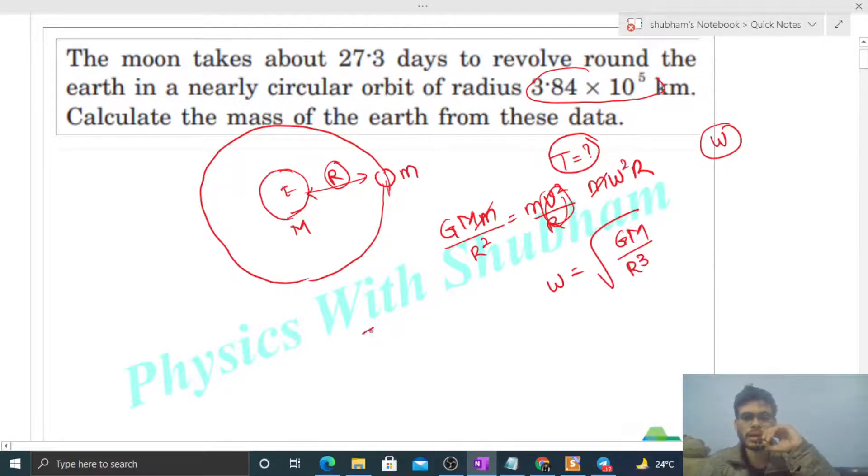And time period is simply 2π/ω. So if we put the value here: 2π divided by omega, it becomes 2π√(R³/GM). That is the value of time period.